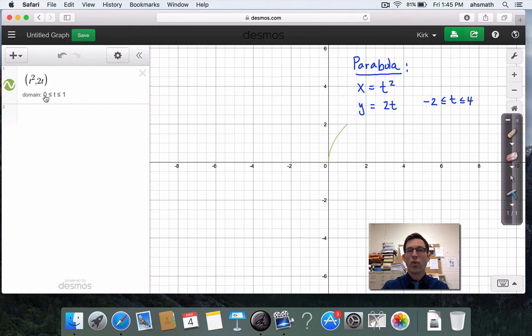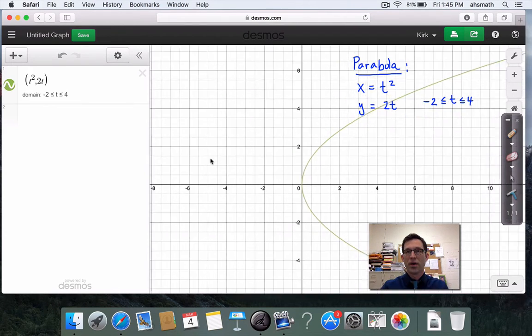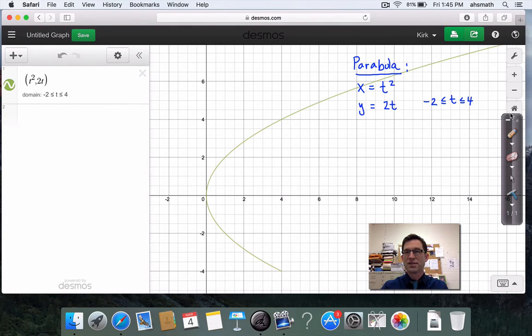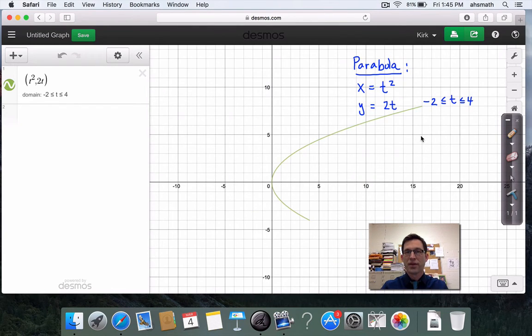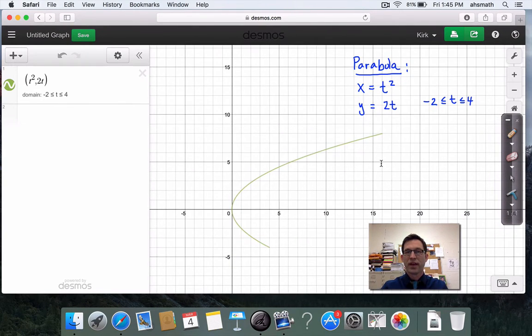2t is my y. Now, again, the default is always 0 to 1. I want to change that negative 2 to 4. And now maybe I'll just kind of drag it down so that I can see that entire thing. Ah, there it is. A little bit better. Get it out of that text.